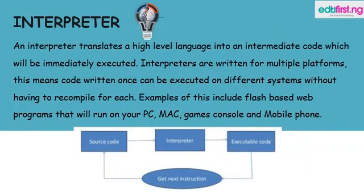An interpreter translates a high-level language into an intermediate code which will be immediately executed. Interpreters are written for multiple platforms, meaning code written once can be executed on different systems without having to recompile for each. Examples of this include flash-based web programs that you run on your PC, Mac, game consoles, and your mobile phone as well.